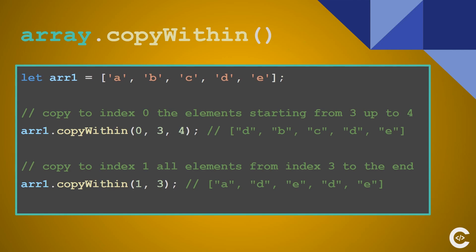And finally copyWithin — that's a really strange method. It copies elements from the array into the array, from some position to another position. In this example we are copying elements from position 3 up to but not including position 4 into position 0 — so we copy D into position 0 which is A, giving us D, B, C, D, E. In the second example we copy everything from position 3 to the end into position 1 — copying D and E onto position 1 — giving us A, D, E, D, E.